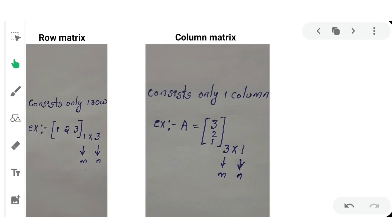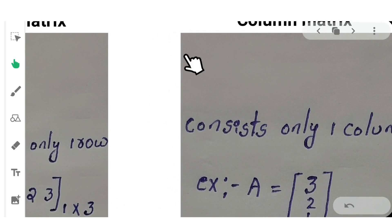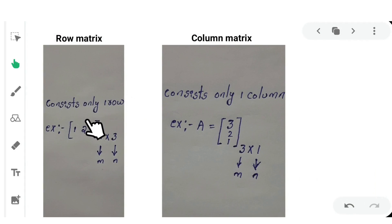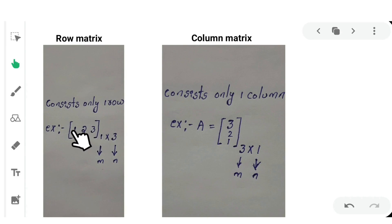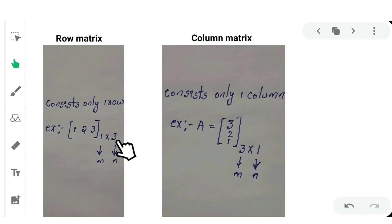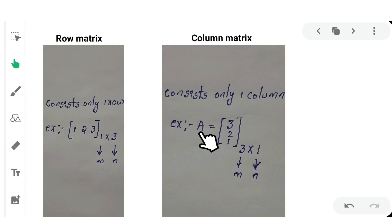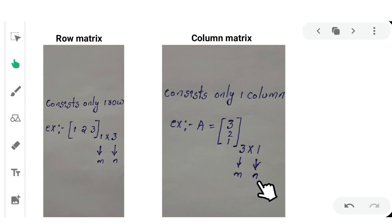Next, row and column matrix. A row matrix consists of only a single row with any number of columns. A column matrix consists of only a single column. For example, matrix A with elements 3, 2, and 1 arranged in a single column forms a column matrix, with 3 rows and 1 column.